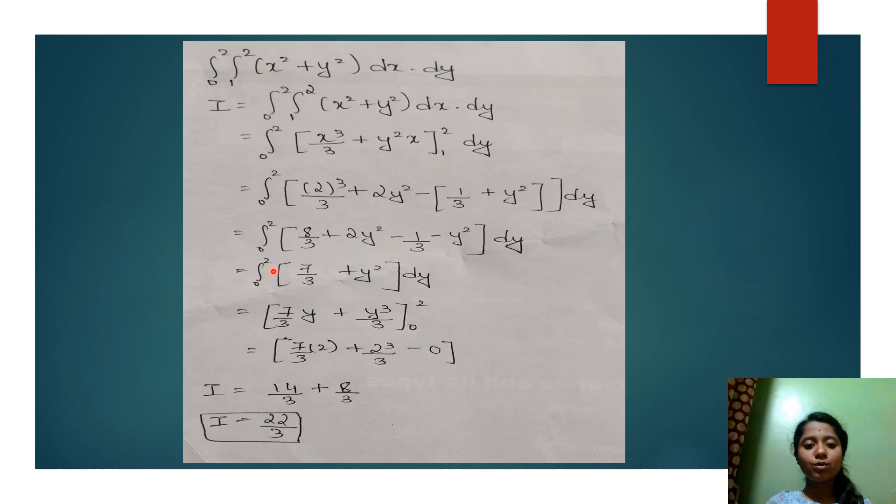The next step is also simplification. Integral 0 to 2: here 8 by 3 minus 1 by 3, since the denominators are equal, 8 by 3 minus 1 by 3 is 7 by 3 plus 2y square minus y square is y square into dy.